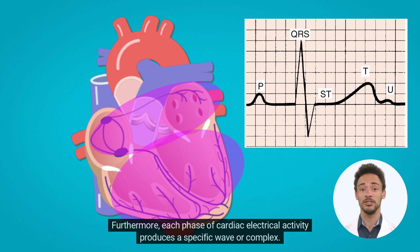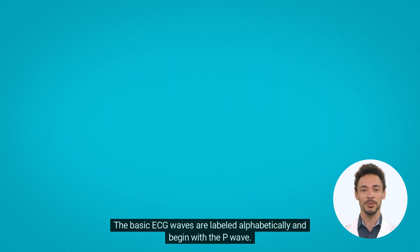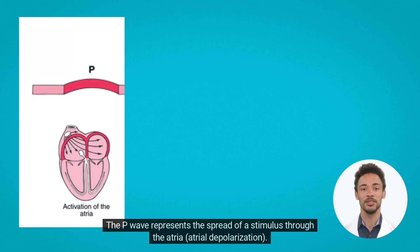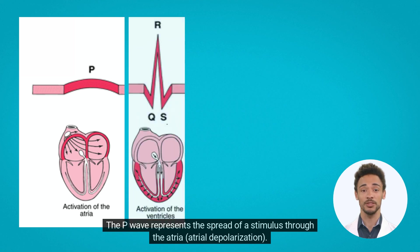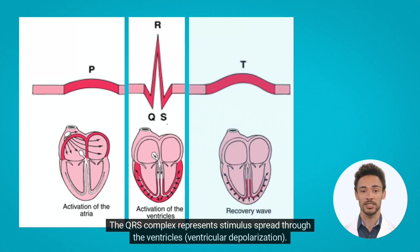Each phase of cardiac electrical activity produces a specific wave or complex. The basic ECG waves are labeled alphabetically and begin with the P-wave. The P-wave represents the spread of a stimulus through the atria – atrial depolarization. The QRS complex represents stimulus spread through the ventricles – ventricular depolarization.